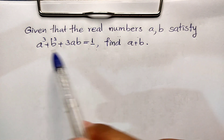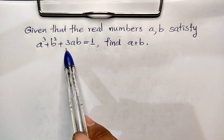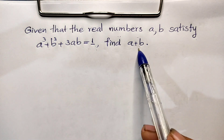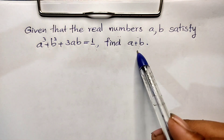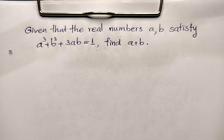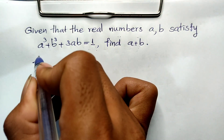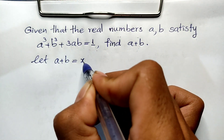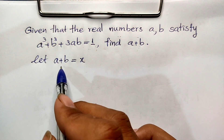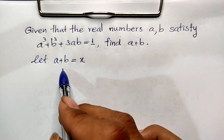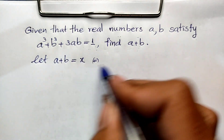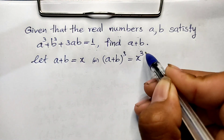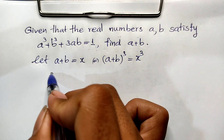We have a³ + b³ + 3ab = 1, and we want to find the values of a + b. To do this, I let a + b equal x. Now I raise both sides of this equation to the power of 3, so x³ = (a + b)³.